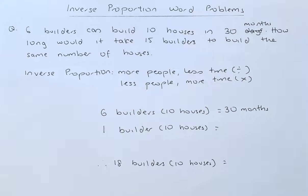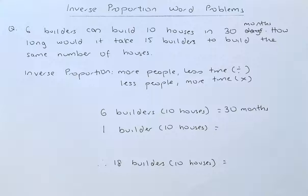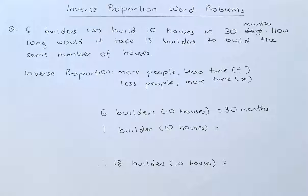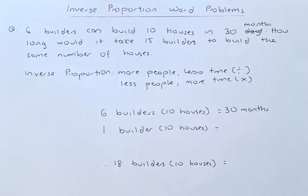So the question, as what you saw on the thumbnail is, 6 builders can build 10 houses in 10 months. How long would it take 15 builders to build the same number of houses? This is an inverse proportion because the more people you have, the less time you take.